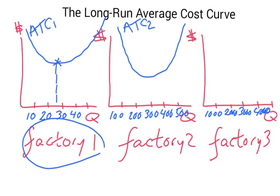And we can do the same for factory three. In factory three, it looks like it's even bigger because we can produce thousands of products there: 1,000, 2,000, 3,000, and so forth. And for factory three, the average total cost curve turns out to look like that, called ATC3.